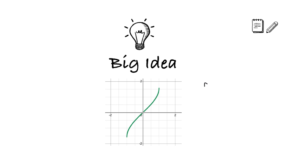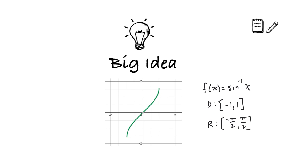And here it is — this is the function f(x) equals sine inverse of x, sometimes called arcsine. It has a domain from negative 1 to 1, exactly the range of the regular sine curve, and a range from negative pi over 2 to pi over 2. Plotting a few key points: the lowest point is (-1, -pi/2), it goes through the origin (0, 0), and the top point is (1, pi/2). The y coordinates are angles and the x coordinates are ratios — that's exactly what an inverse does.